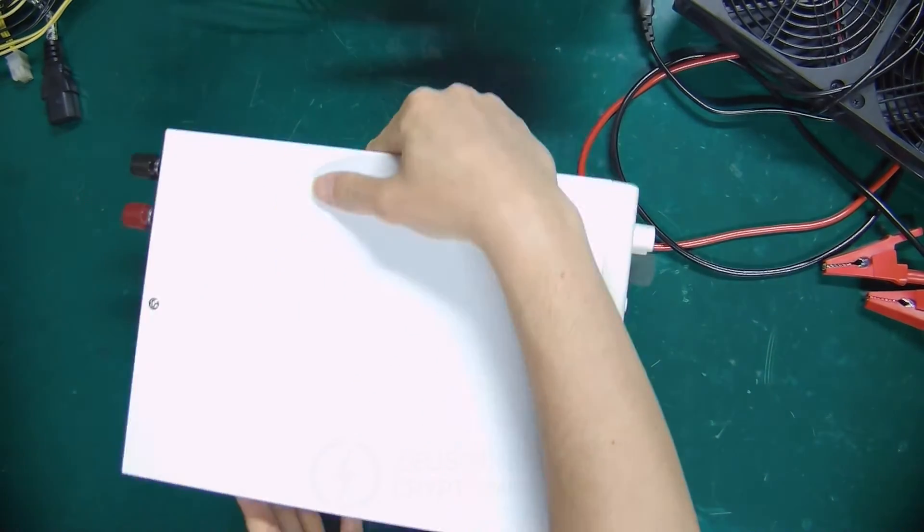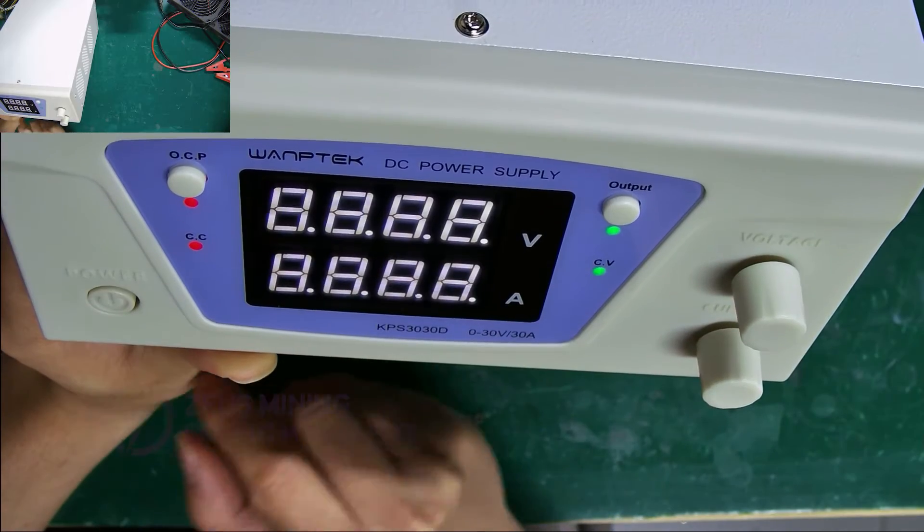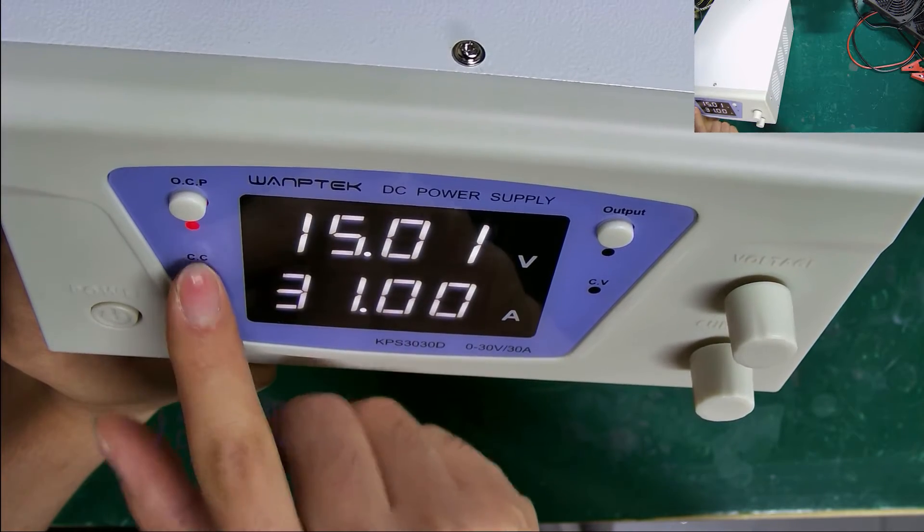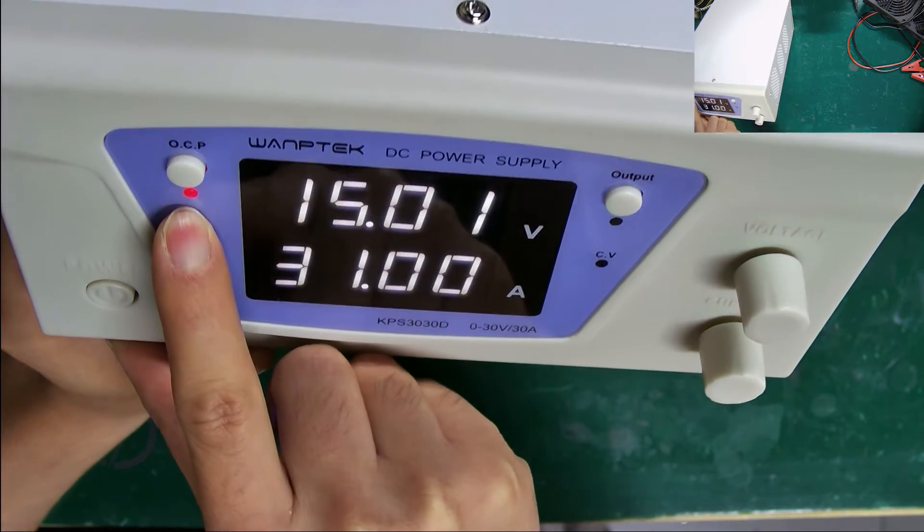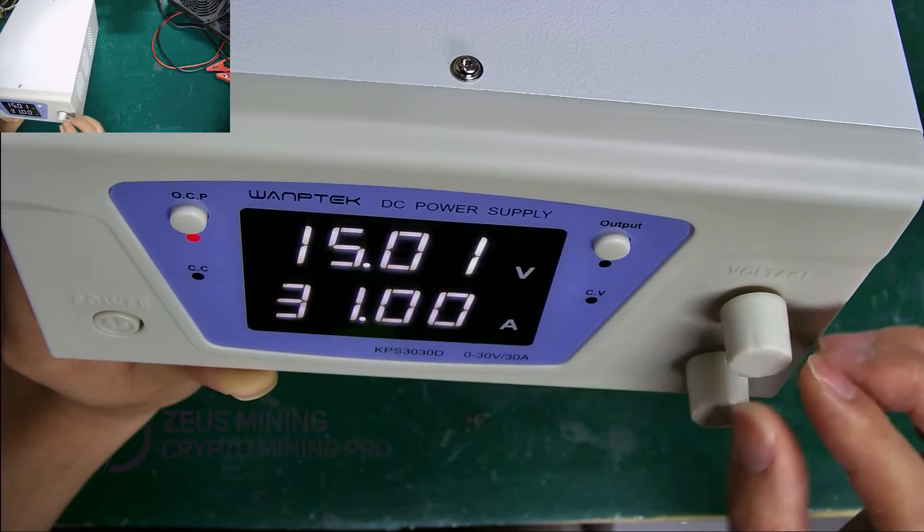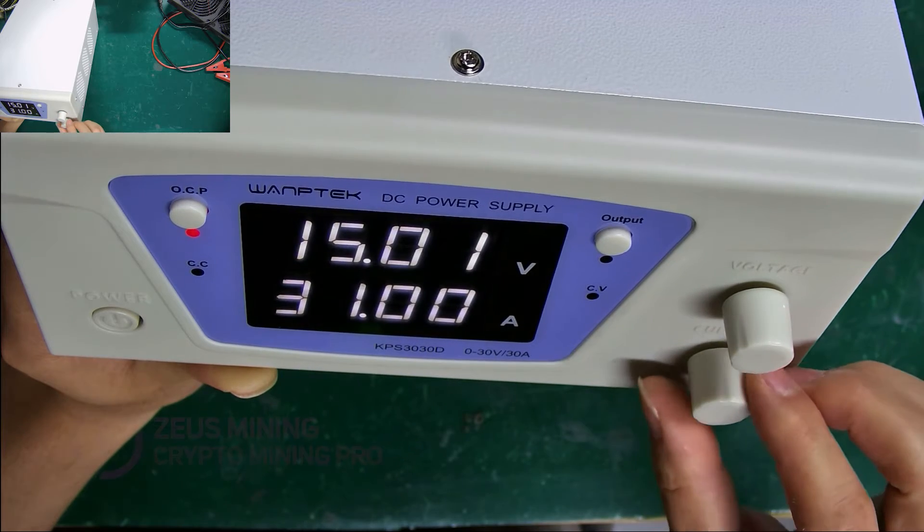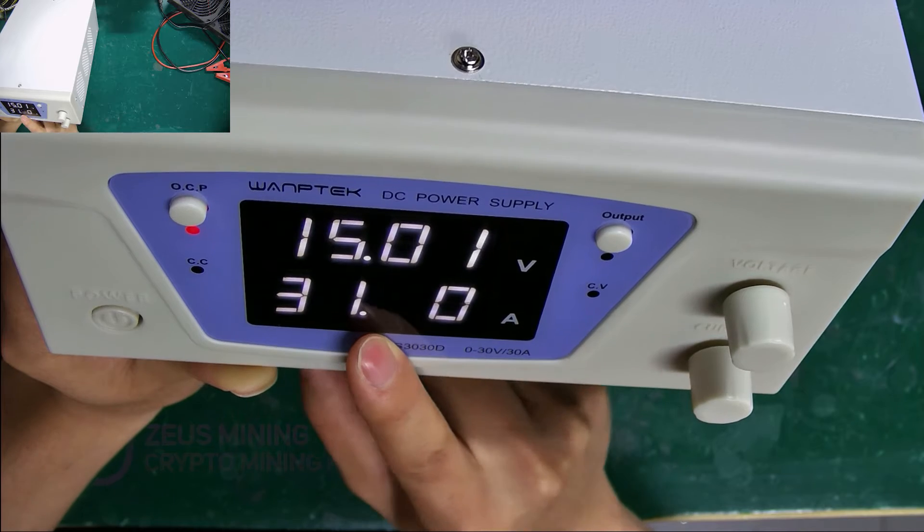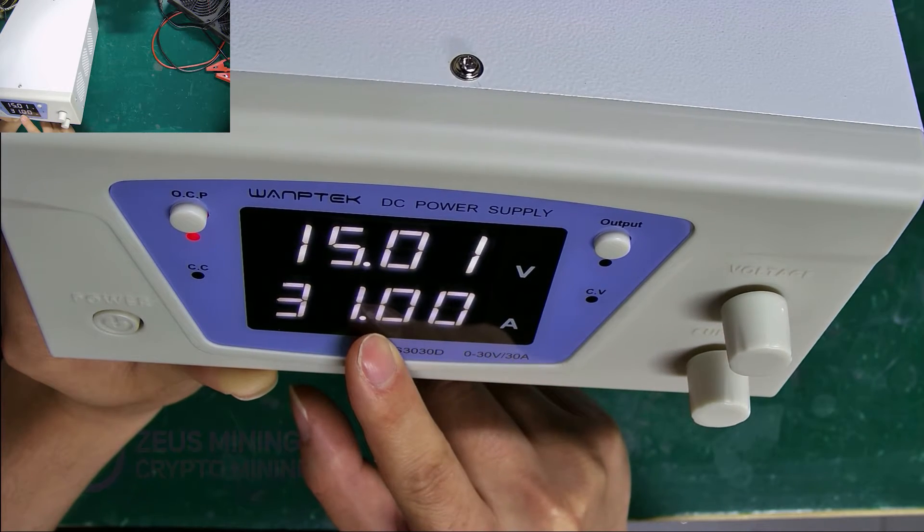Next, let's see how to use it. First, plug in the power cord, and then turn on the switch. When powering the hash board, we need to press this switch, and it works when the light turns on. Turning the knobs counterclockwise decreases, and clockwise increases. But the current is generally auto-adjusted, setting it to the maximum value is usually fine.